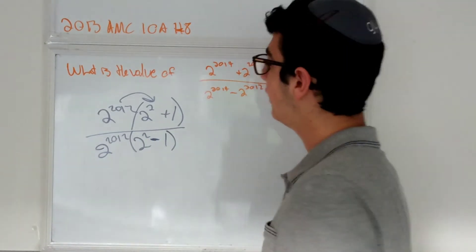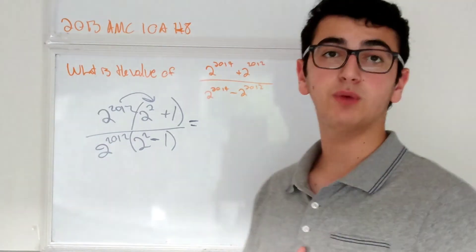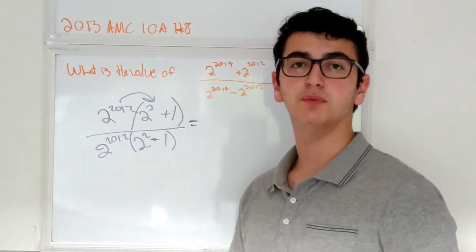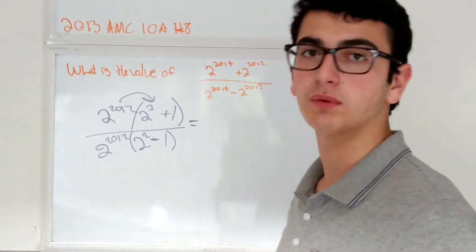Okay, now all we need to do is solve for this. And what you'll notice over here is that now we do have like terms between the numerator and denominator which can cancel out, which makes our life so much more simple.